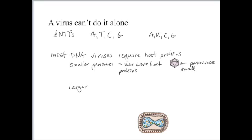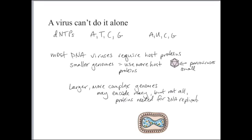Viruses with larger and more complex DNA genomes may encode many, but not all, of the proteins required for DNA replication. A great example of a virus that encodes many of its own proteins for DNA replication is smallpox. Smallpox has, in viral terms, a huge genome, and it actually replicates in the cytoplasm, so it encodes its own DNA polymerase, and most of the machinery needed for DNA replication.